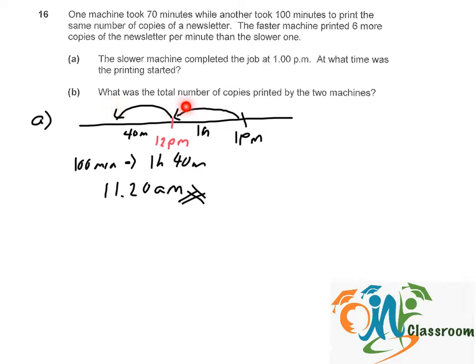So for part B, what was the total number of copies printed by the two machines? The slower one took 100 minutes to print the whole job. So in 70 minutes, the slow one would have only completed 70 out of 100 which is 7 over 10 of the print job.